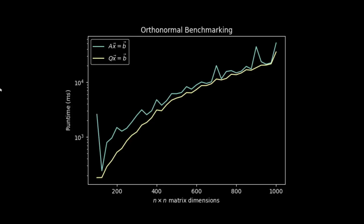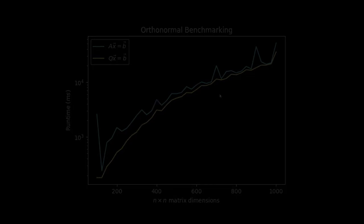But generally speaking you can see that as we scale up the dimensions of our matrix, our linear system containing the orthonormal matrix is solved significantly faster at the smaller dimensions, but then even as we work our way out to the higher dimensions, our linear system containing the orthonormal matrix is consistently being solved faster than our Ax equals b system.